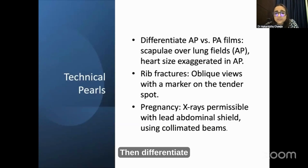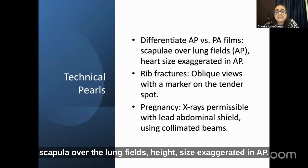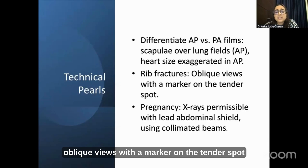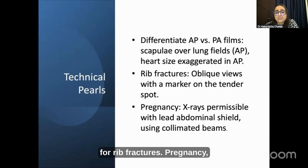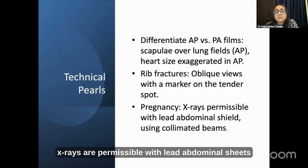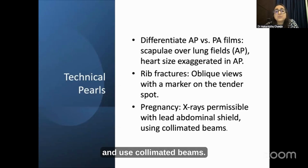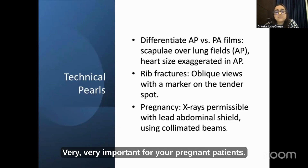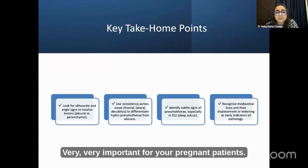Differentiate AP versus PA films — clavicles over the lung fields and heart size are exaggerated in AP views. Oblique views with a marker on the tender spot help for rib fractures. Regarding pregnancy, X-rays are permissible with lead abdominal shielding — use collimated beams, very important for your pregnant patients.